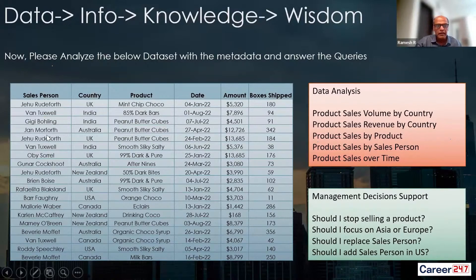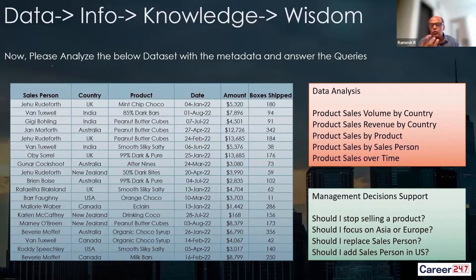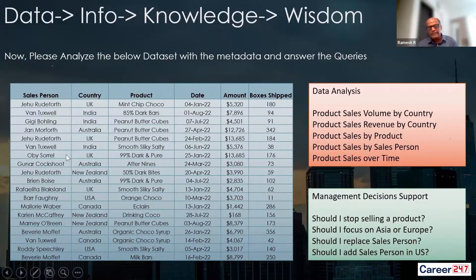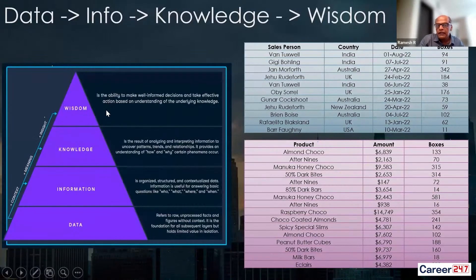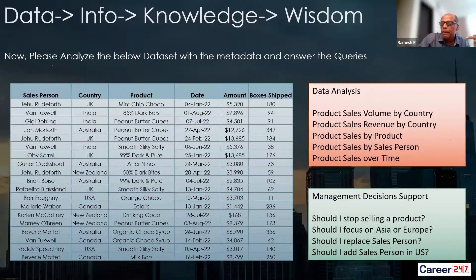Kis ne sabse achha banaya? Jehu ne banaya, Gunnar ne banaya ya Brian? Inhone banaya ki nahi barabar se? So inke jo sales data hai, wo hum log bada sakte hain. And over a period of time, sales ghat raha hai ya sales upar ja raha hai — that is something we also need to know. Now this is all knowledge. But then it's the decisions that we make — that is where the wisdom comes into play. You get the difference?